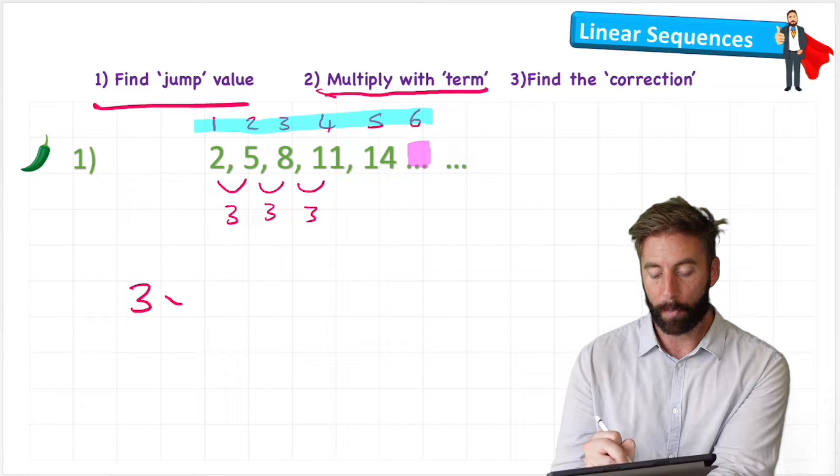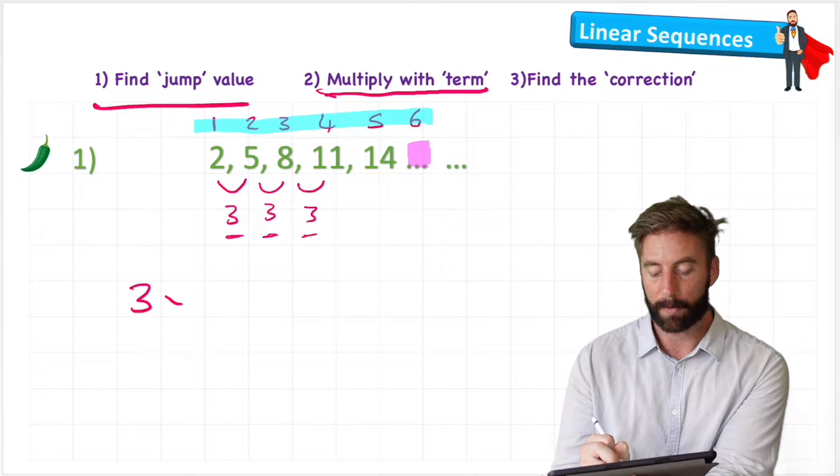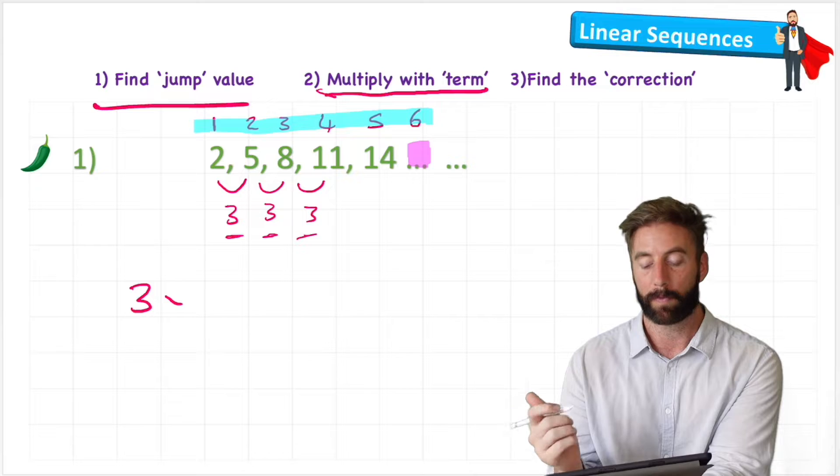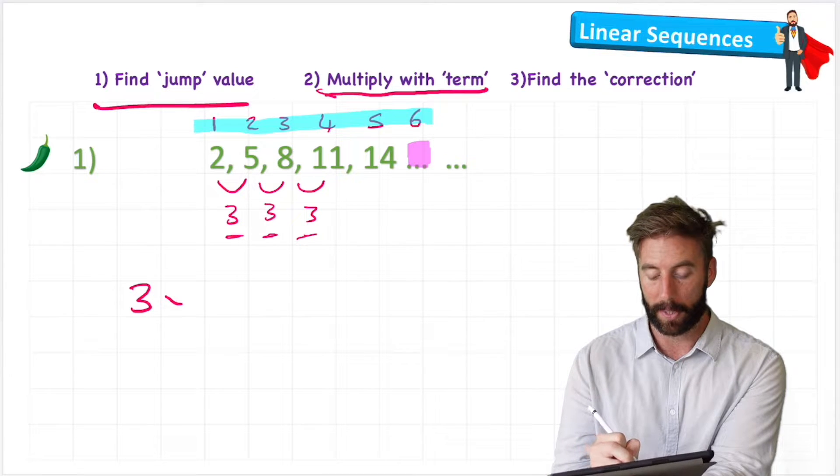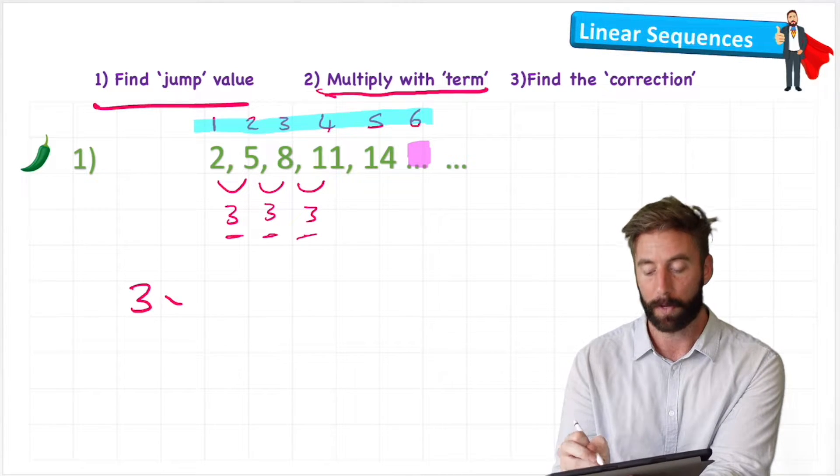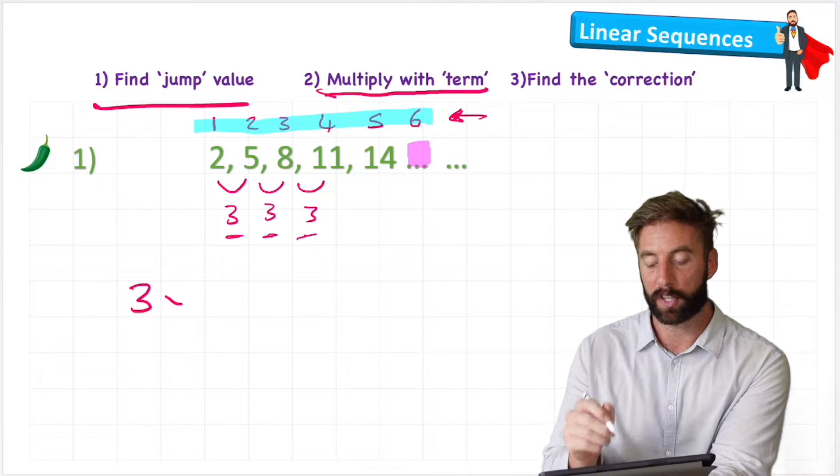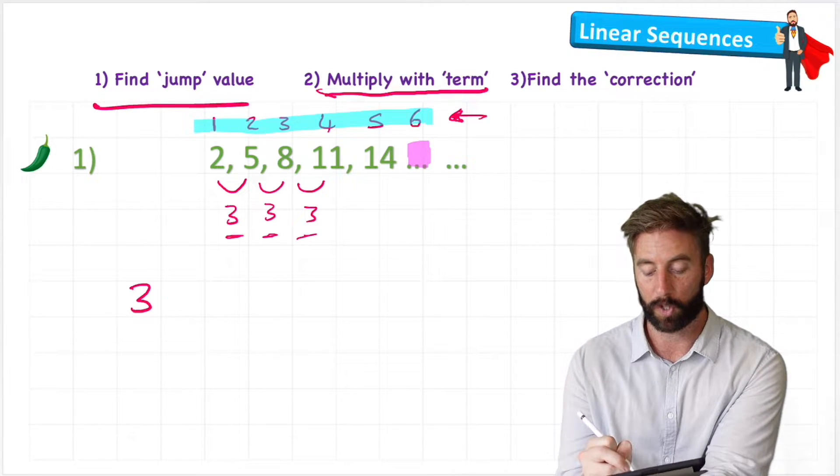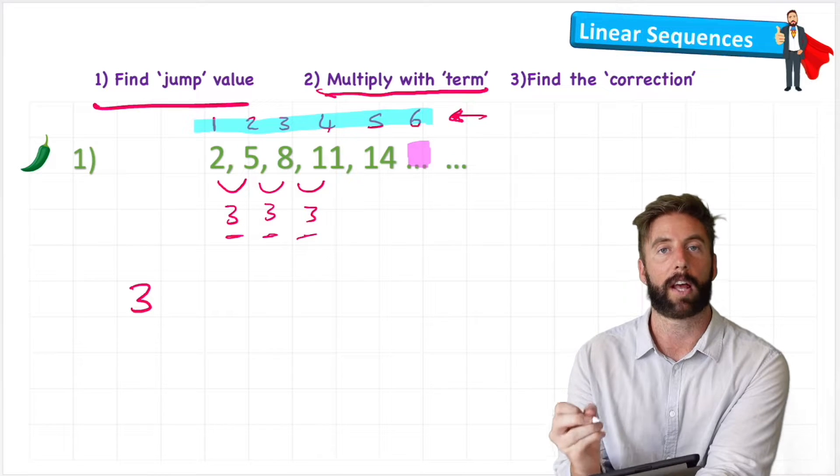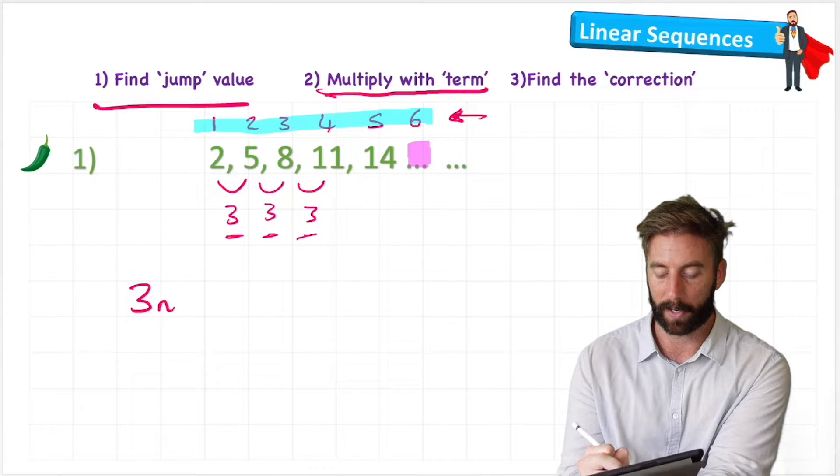Now if we think about it, if we're going up in threes, then it's a bit like the three times table. So if I multiply my 3 by my term, these numbers here in the blue line, then I'm going to get somewhere close to the sequence value. So to show that I can write 3n for my algebraic letter.